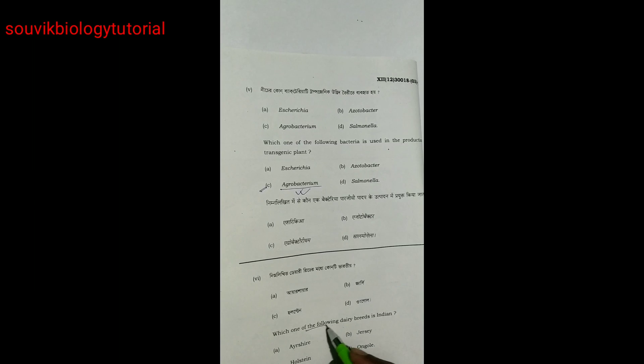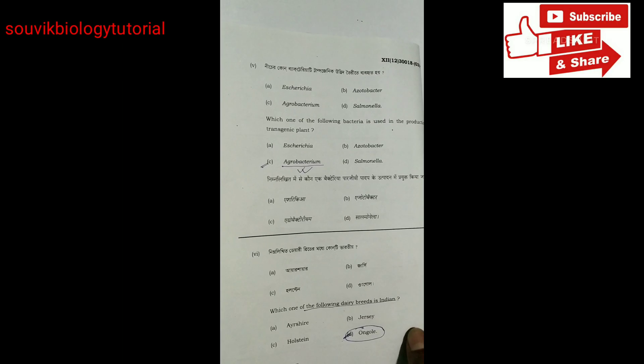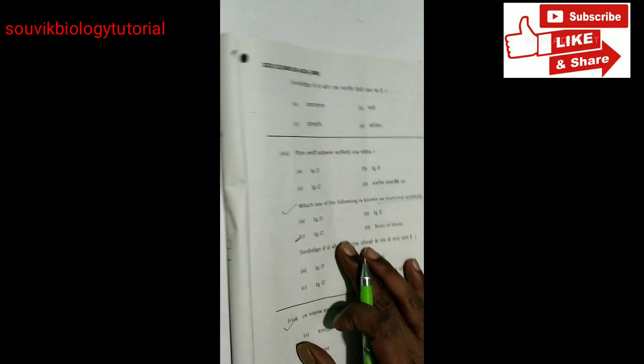Which one of the following dairy breeds is Indian? Ongole. It is found in Andhra Pradesh. Next.